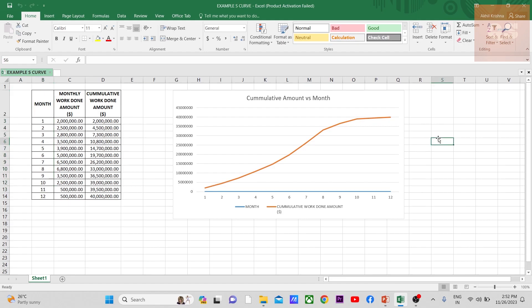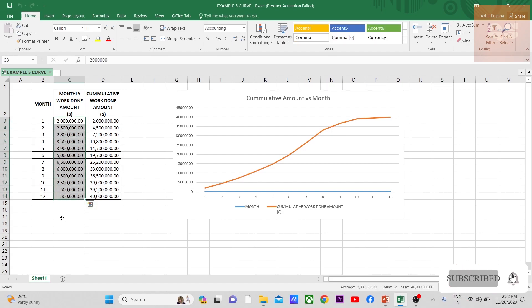That is how the cash flow and S-curve is related to each other. Now when the project actually starts, this is just the estimated one. We will be making as per the actual and we will be plotting it against the estimated one.